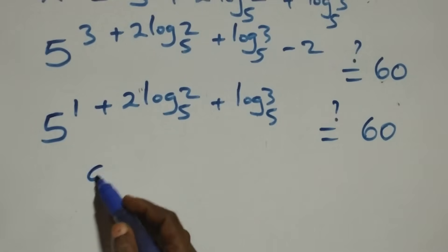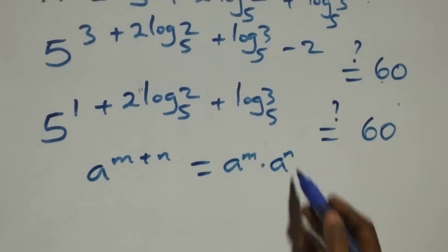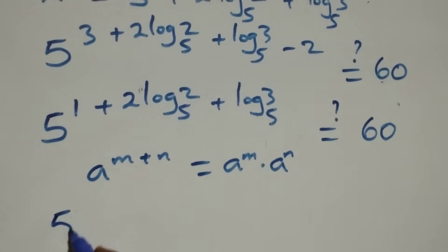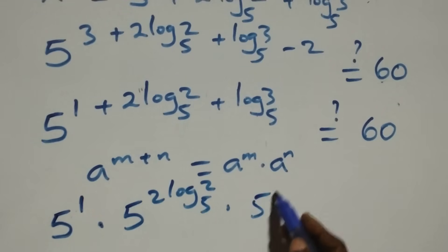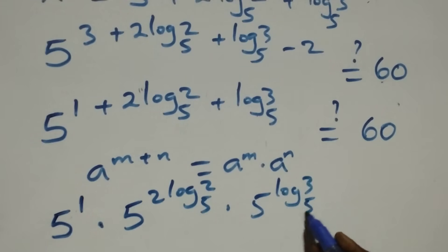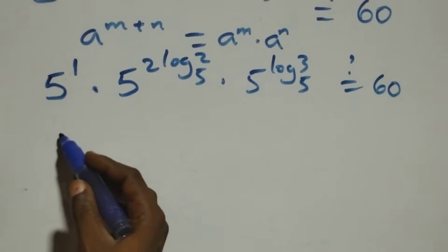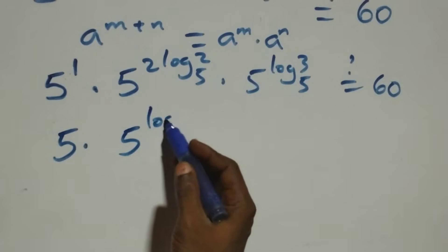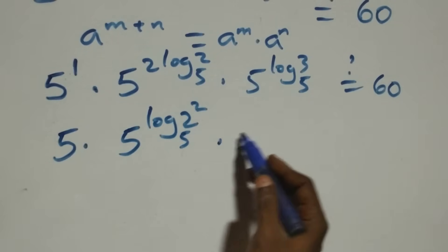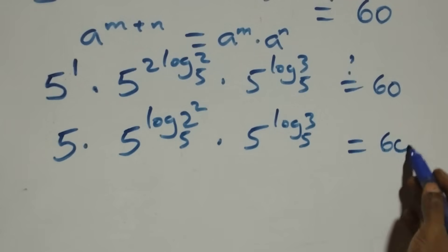We apply the laws of indices: a raised to power (n plus n) is the same as a raised to power n times a raised to power n. So this becomes 5 raised to power 1, times 5 raised to power 2 log₅2, times 5 raised to power log₅3, equals 60. And 5 raised to power 1 is simply 5.